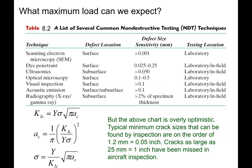What crack size do we use as a standard flaw size in design? In design we assume there is a crack or flaw of some size already in the material. That depends on the inspection technique used. For example, with visual inspection in the laboratory or field, a defect size needs to be greater than 0.1 millimeters in order to be observable.